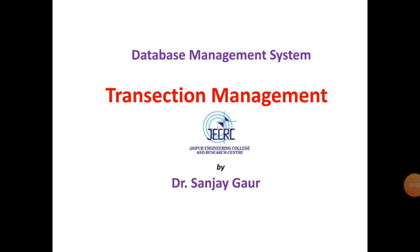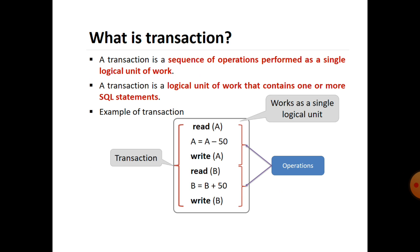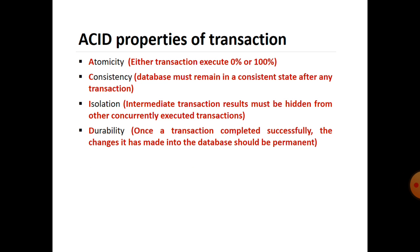In database management systems, today we are discussing transaction management. A transaction is a sequence of operations performed in a single logical unit of work — basically a logical unit that contains one or more SQL statements. For example, a complete transaction: read A, A equals A minus 50, write A, read B, B equals B plus 50, write B. The two operations together form a single transaction unit. The ACID properties of transactions are: Atomicity, Consistency, Isolation, and Durability.